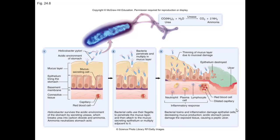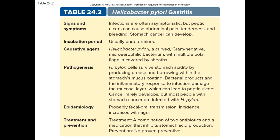How does bismuth compounds — Pepto-Bismol — work? Bismuth is a heavy metal, but it doesn't usually separate from the salicylate part of the molecule. Instead, the bacteria glom onto and attach to the Pepto-Bismol, which allows for eradication. Table 24-2 gives the complete review of Helicobacter pylori.